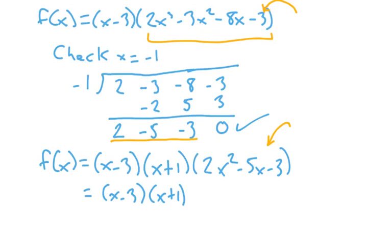We can factor the quadratic the old-fashioned way, using trial and error. Looking at 2x² minus 5x minus 3, I think I'm going to need a 2x and an x. To get that 3, I need to put a 3 in one spot and a 1 in the other, with appropriate signs. Checking by the FOIL rule, that gives me (2x + 1)(x − 3), which is exactly what I have. So we have completely factored the polynomial into linear factors.